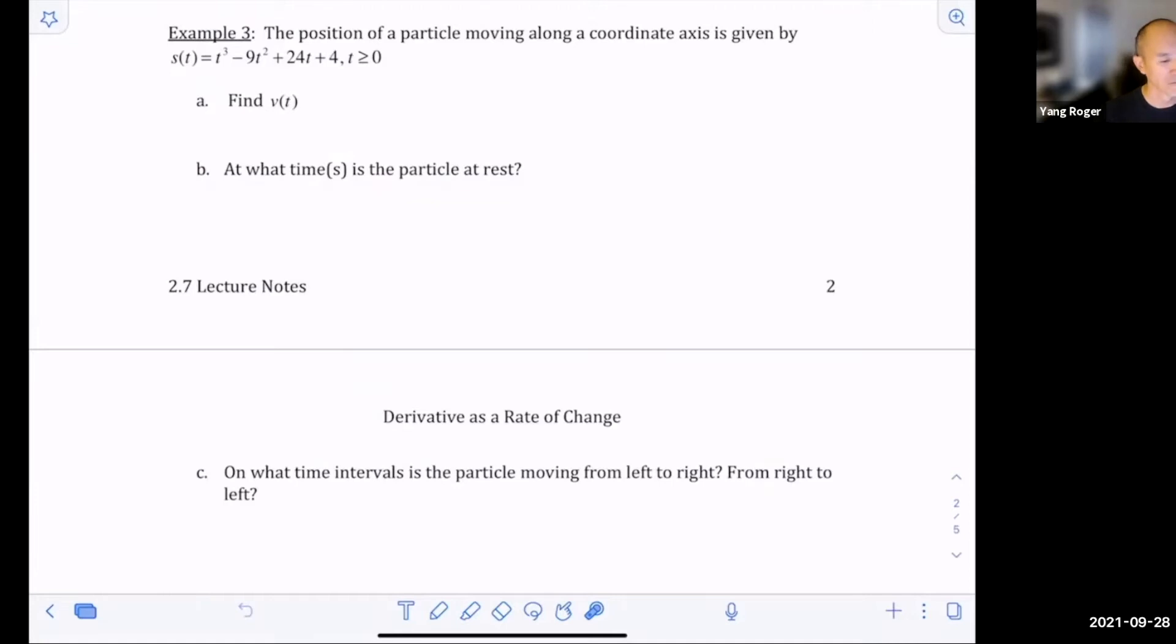Let's take a look at example three. The position of a particle moving along a coordinate axis is given by this position function. We need to find the velocity. The velocity is just the derivative of the position function, and that's just going to be 3t squared minus 18t plus 24.